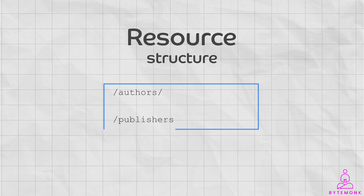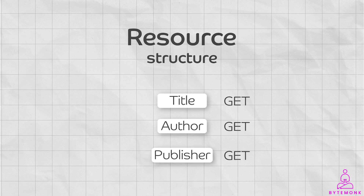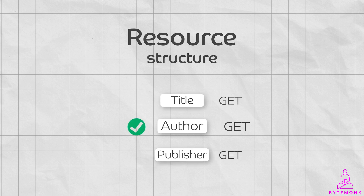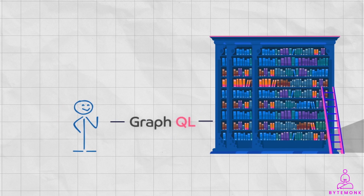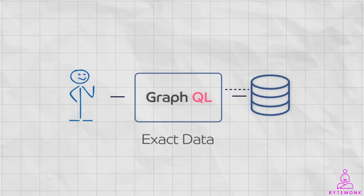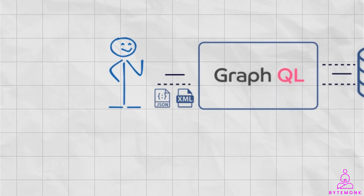In the real world, it is more common to have separate resources for title, author, and publisher, because these pieces of data are often used independently of each other. For example, you might want to get the list of all books by a particular author without having to get the full details of each book. GraphQL is like a personal librarian in that it allows you to request the exact data you need, in the format you need.